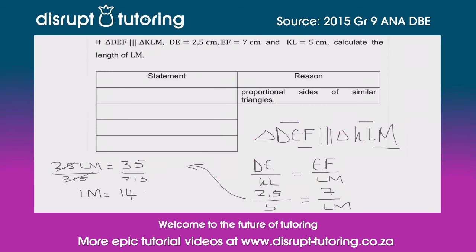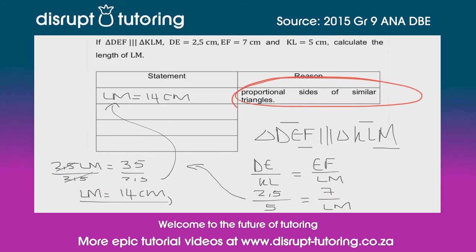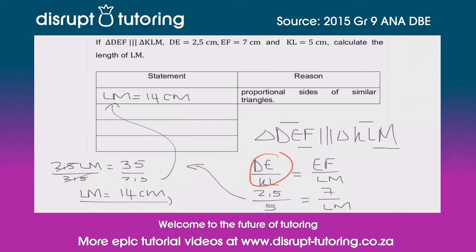So LM is equal to 14 centimeters — that's our final answer. The reason we can use proportional sides is that the problem already told us the triangles are similar. I really hope this helped. These similar triangles can be quite confusing, but once you understand how to set up the ratio at the start, you'll never get it wrong. After that it's simply basic algebraic equation rules.